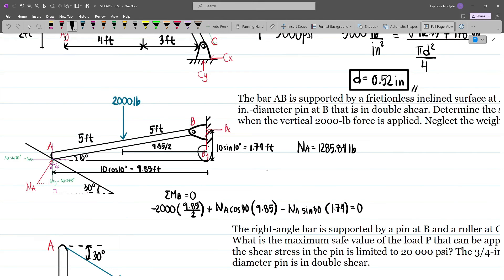And so now I can already solve By and Bx. We can sum up vertical and horizontal forces. So summing up vertical forces, we have By minus 2000 plus Na cos 30. This is equal to 0. However, we know that Na is equal to 1285.84.